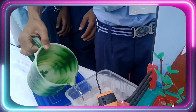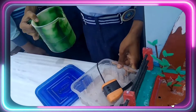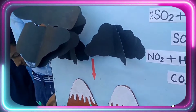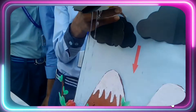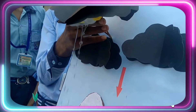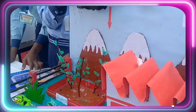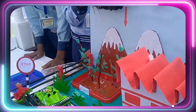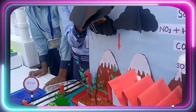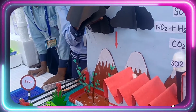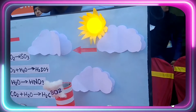If this acid rain falls on people or animals, the animals get skin diseases and many other diseases. And if it goes into the river, the aquatic animals can die easily and they are not able to take in oxygen easily.